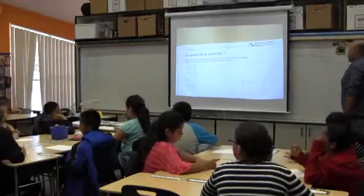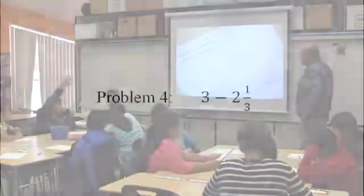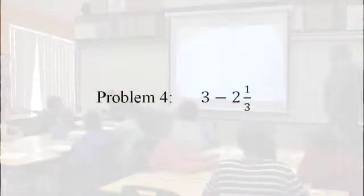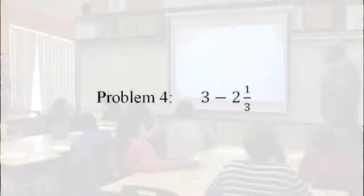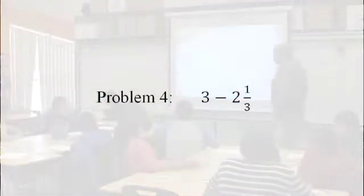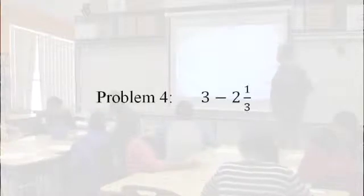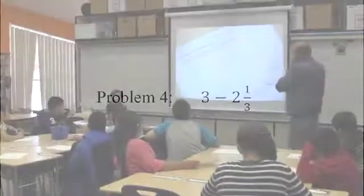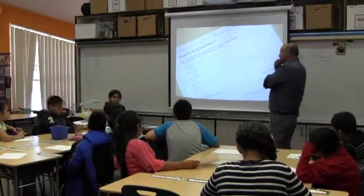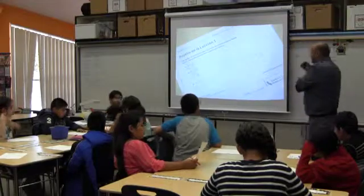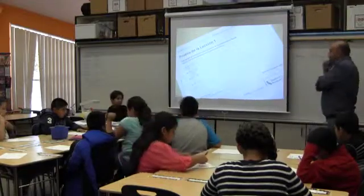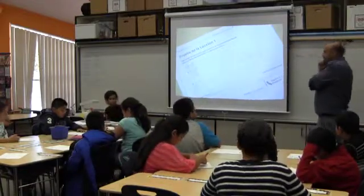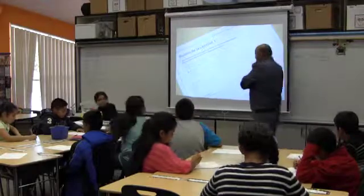Jelena, can you do number four, please? Explain to us what you did. I regrouped the three and did two and three-thirds. And then I subtracted it to two and one-third. The answer is two-thirds, because two minus two is zero, and three-thirds minus one-third is two-thirds. Any questions? All right.